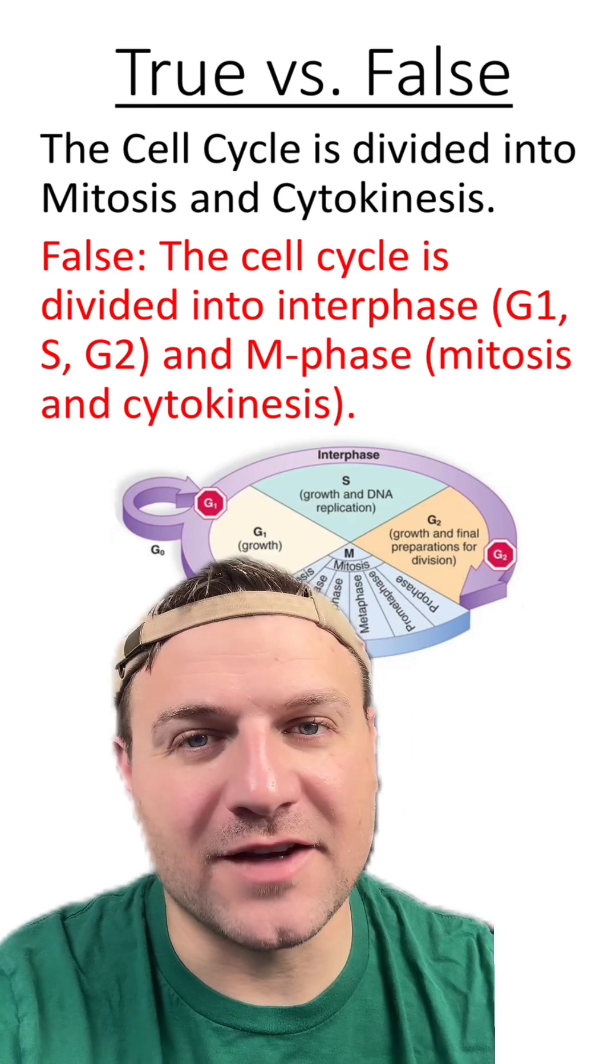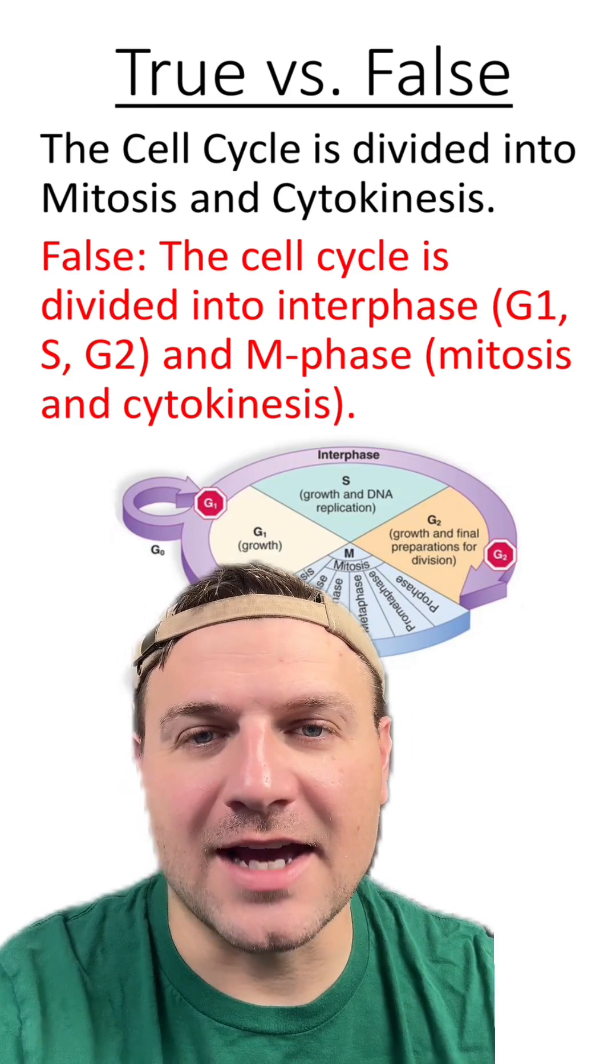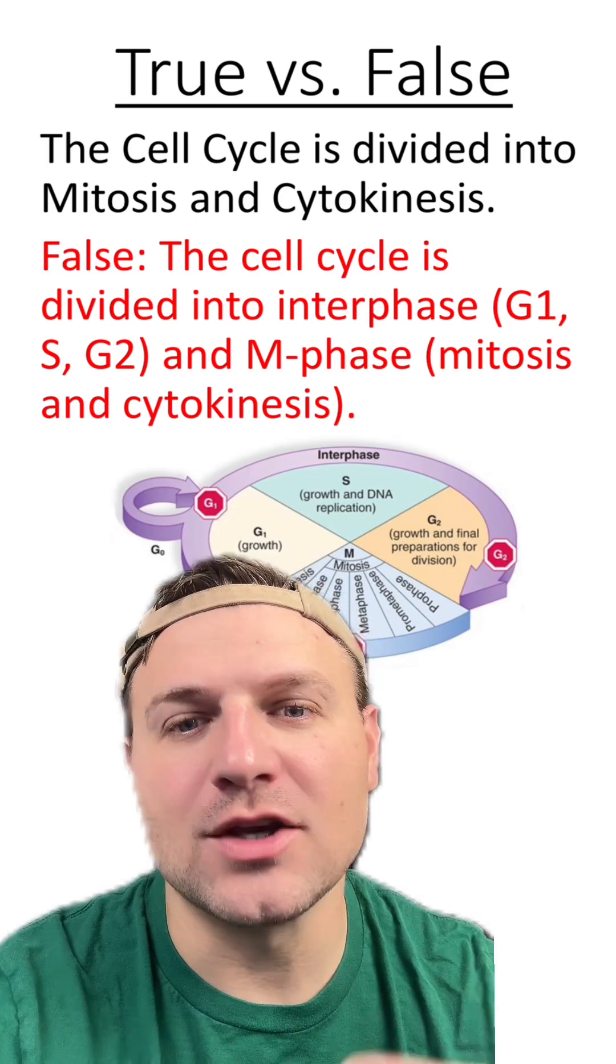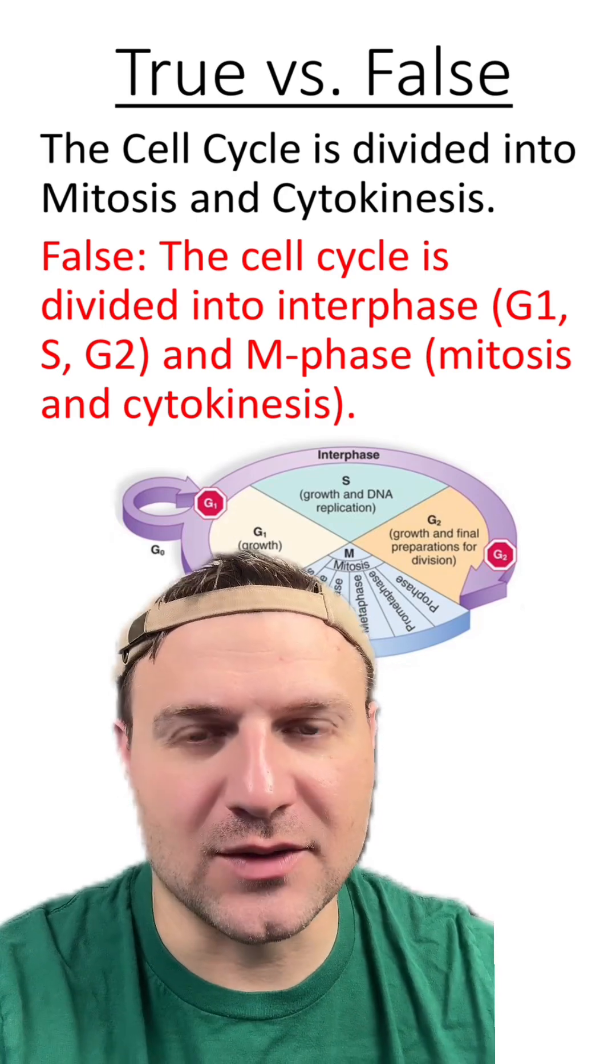The cell cycle is divided into interphase and M phase. Interphase has G1, S, and G2 phases, while M phase has mitosis and cytokinesis.